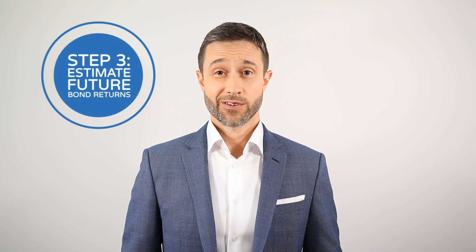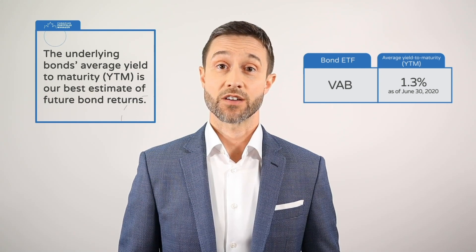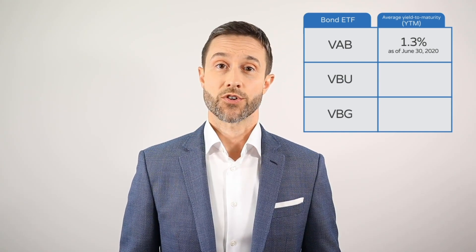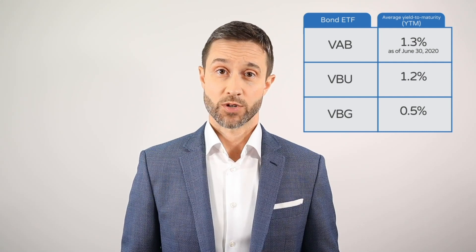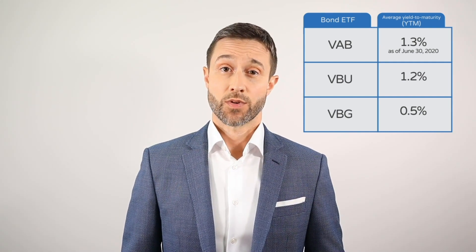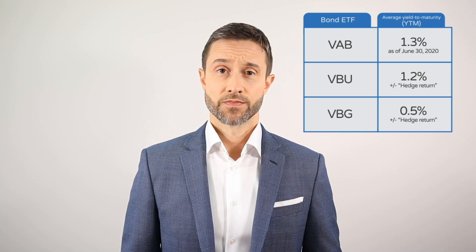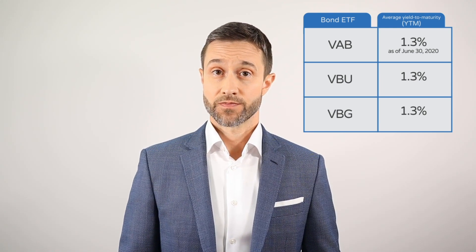If lower future expected stock market returns have got you down, prepare to be even more disappointed with your bonds. For the Canadian bond portion of the Vanguard Asset Allocation ETFs, the underlying bond's average yield to maturity is our best estimate of future bond returns. This average sits at a meager 1.3% as of the end of June 2020. The Vanguard Asset Allocation ETFs also include currency-hedged foreign bonds, and it's a bit more complicated to estimate their expected returns. US bonds would be expected to return 1.2%, and international bonds would be expected to return only 0.5%. But currency-hedged foreign bonds are also expected to provide a positive or negative hedge return from their currency hedging strategies, which tend to bring their returns more in line with domestic bonds. So to simplify our analysis, we can just assume the currency-hedged foreign bonds are expected to return the same as Canadian bonds after all adjustments, or 1.3%.